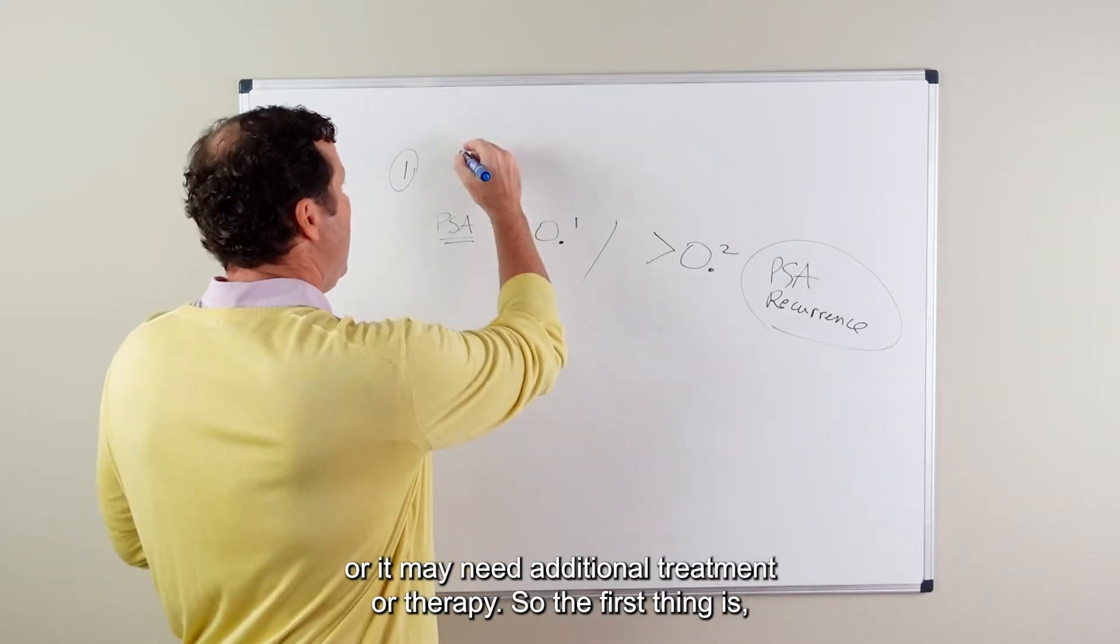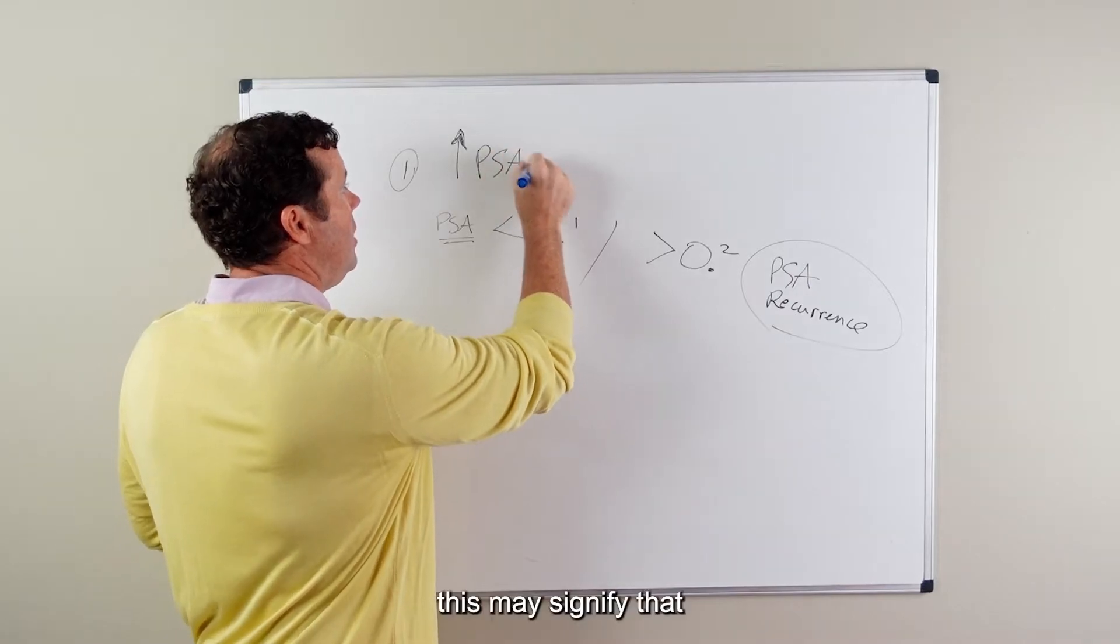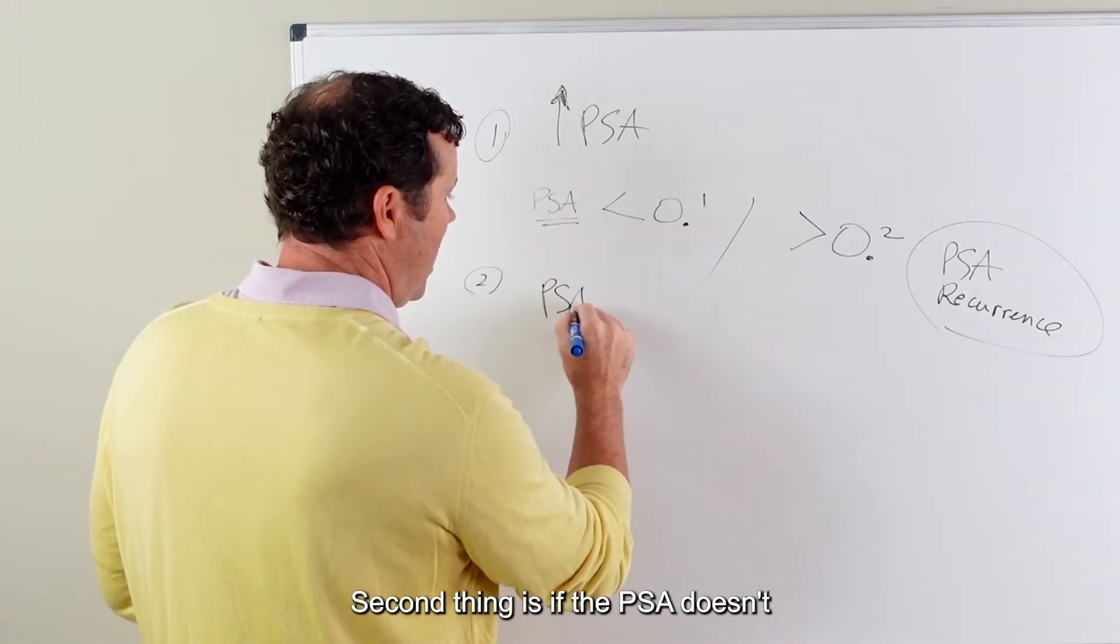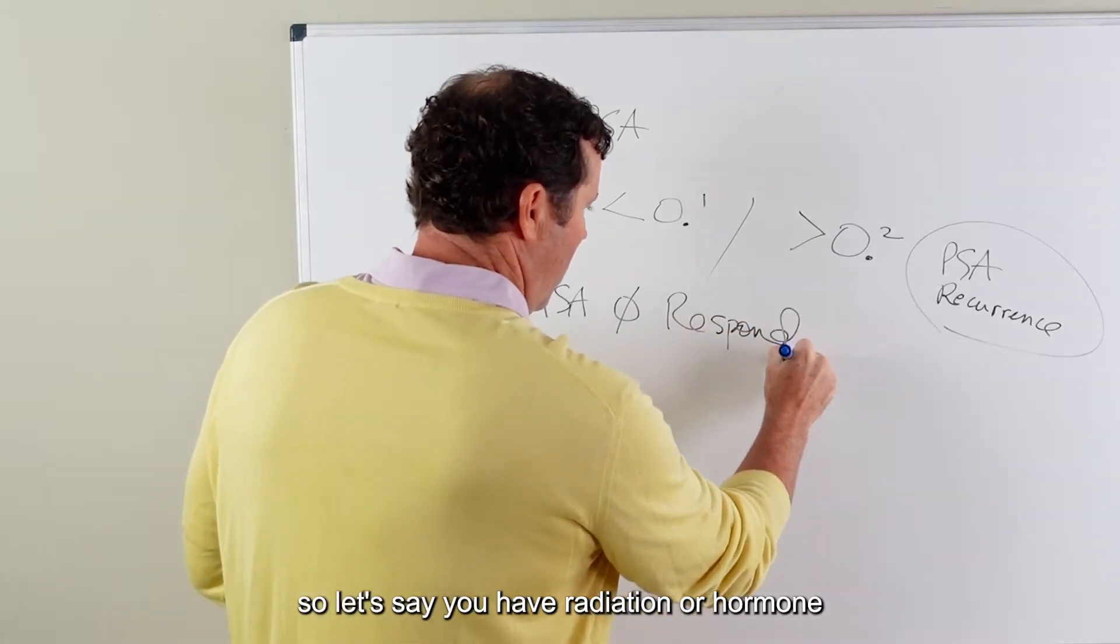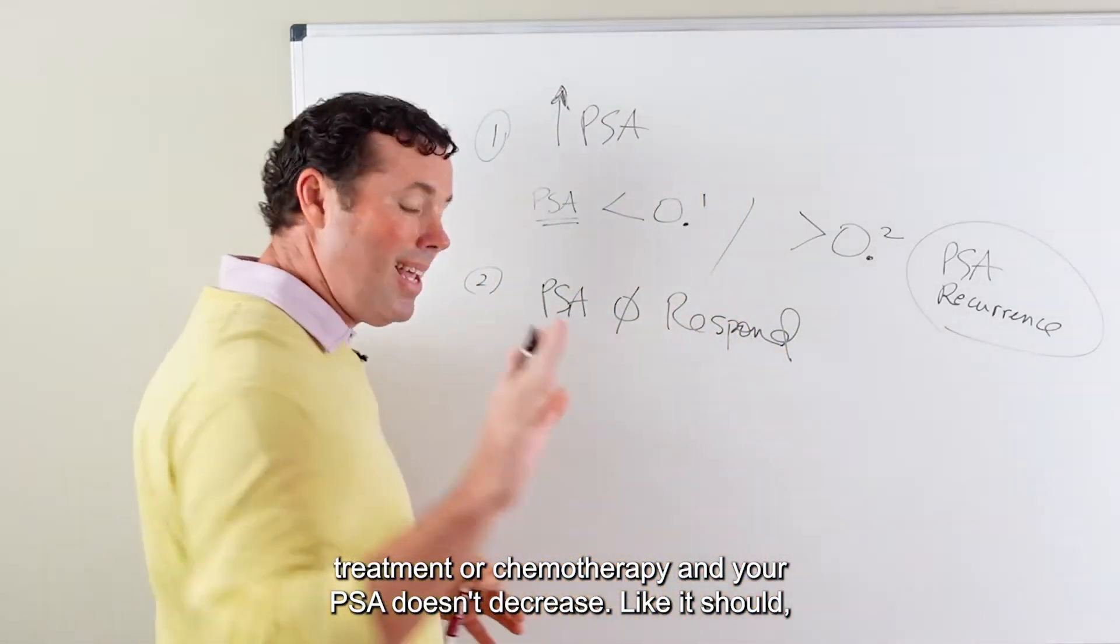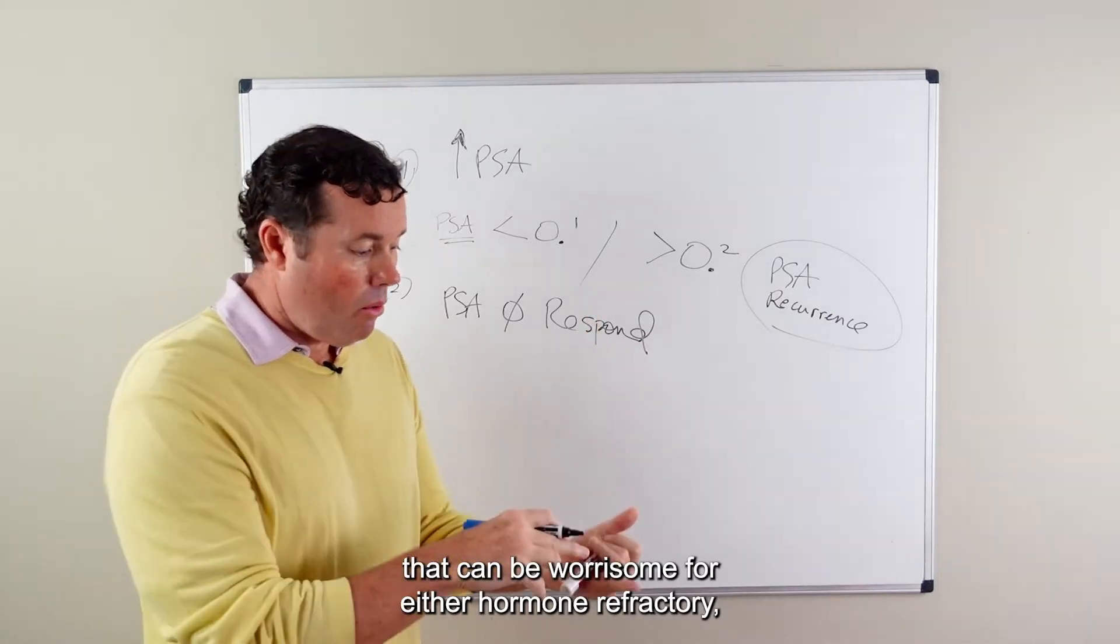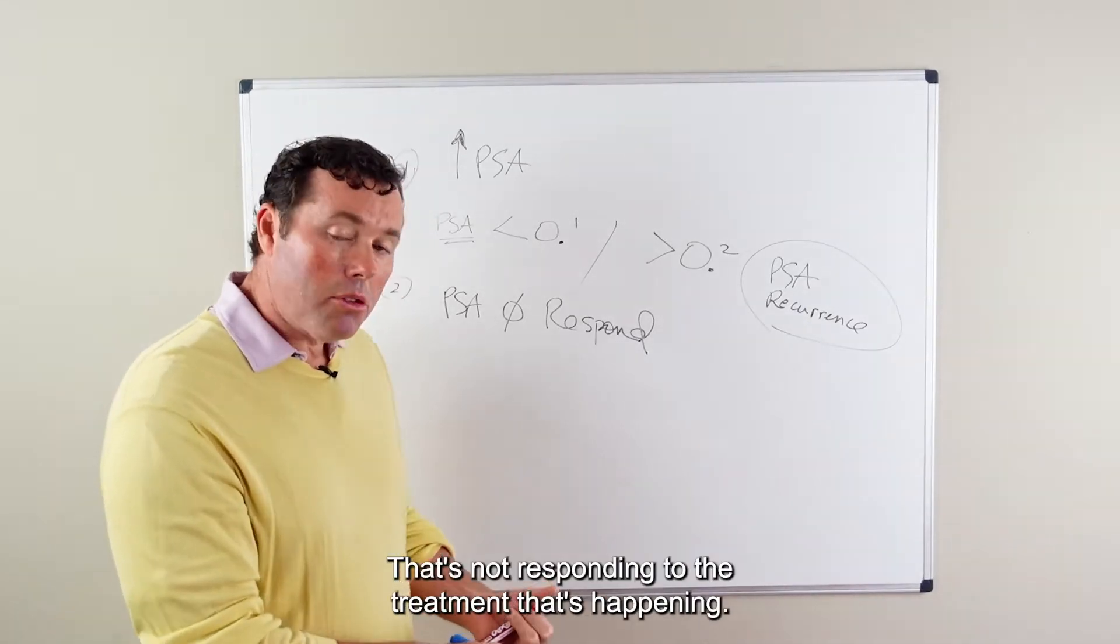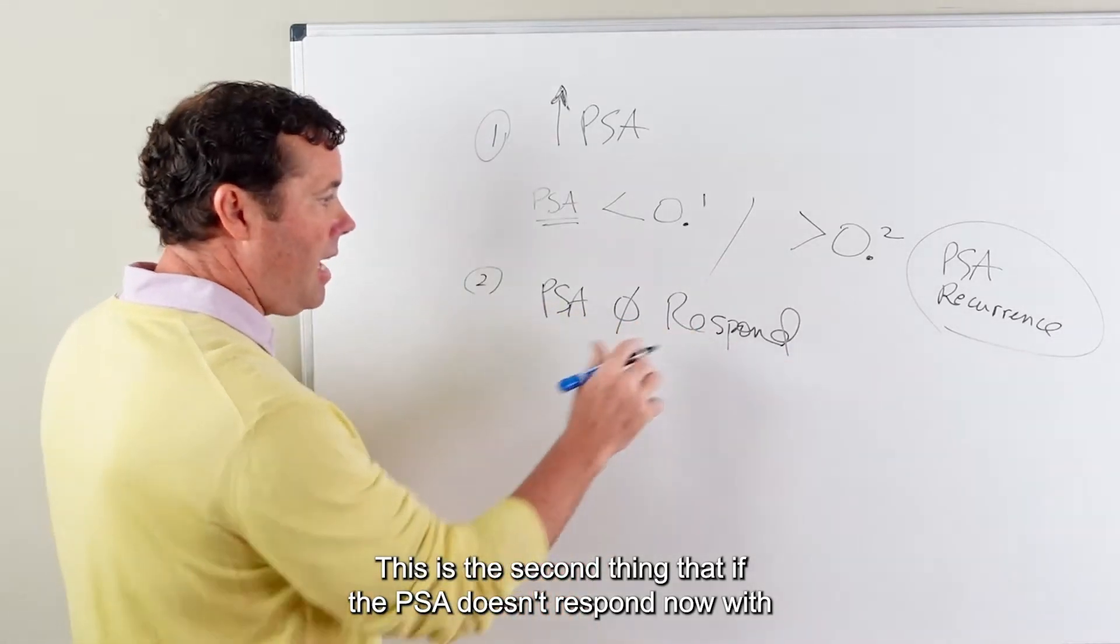So the first thing is if your PSA is going up after treatment, this may signify that you may need some additional treatment. Second thing is if the PSA doesn't respond to treatment. So let's say you have radiation or hormone treatment or chemotherapy and your PSA doesn't decrease like it should, that can be worrisome for either hormone refractory prostate cancer or cancer that's not responding to the treatment that's happening. This is the second thing, if the PSA doesn't respond.